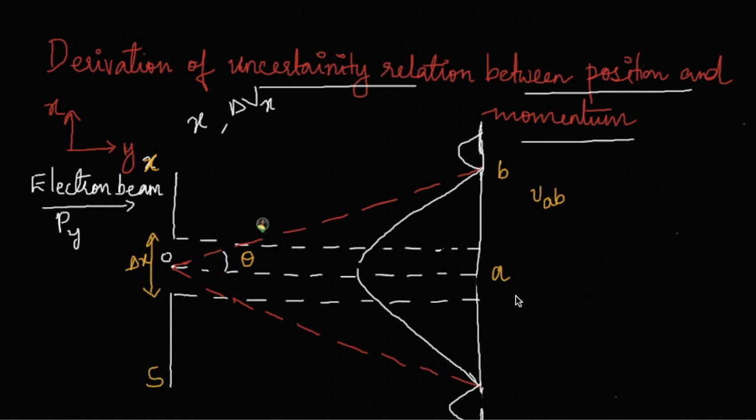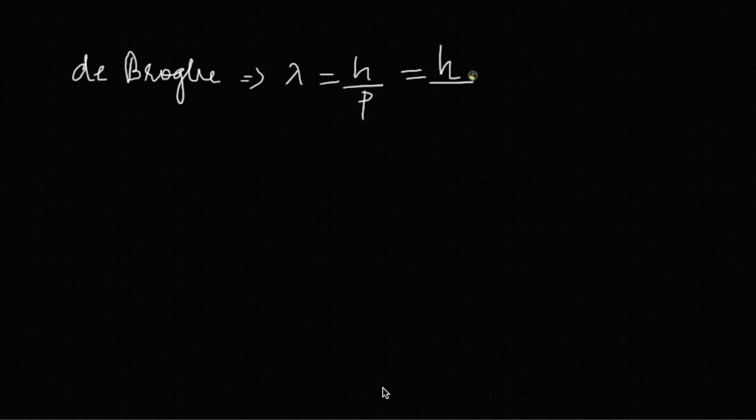Now we are going to use the diffraction principle and get the uncertainty relation. For an electron beam, the de Broglie wavelength is given by lambda equals h by p, or we can write it as h by mv. Call it equation 1.